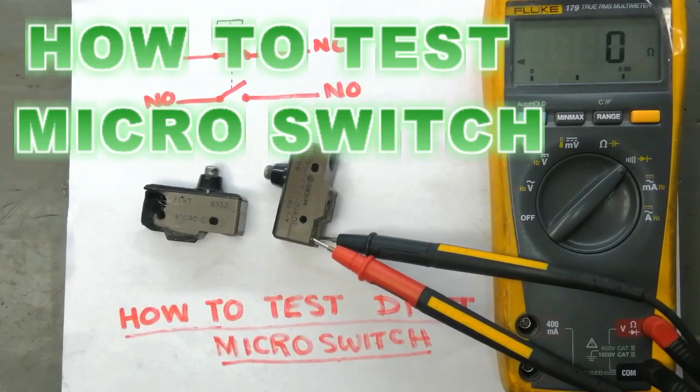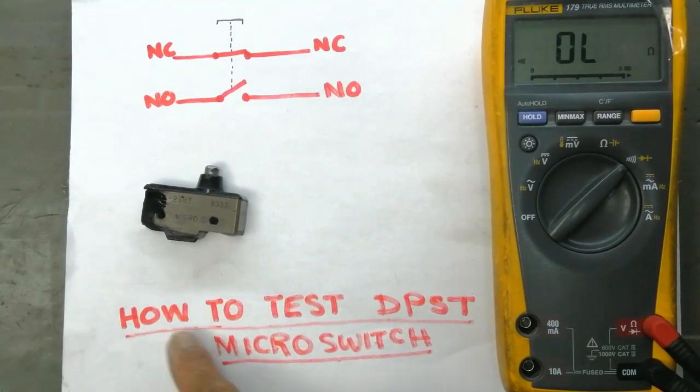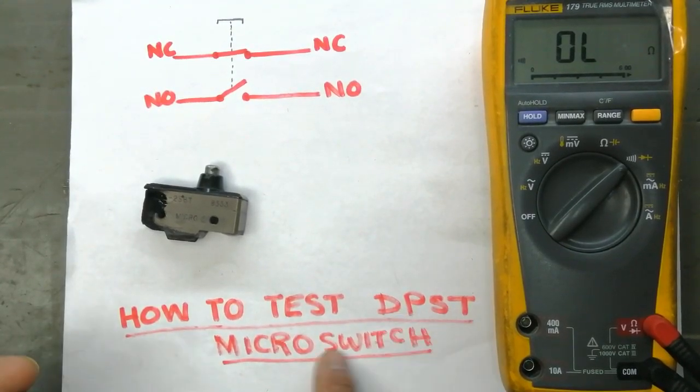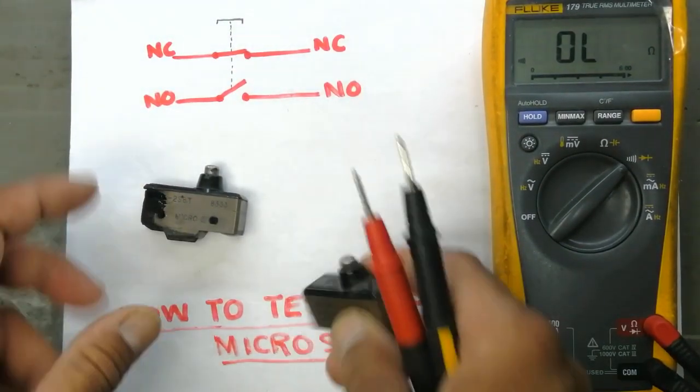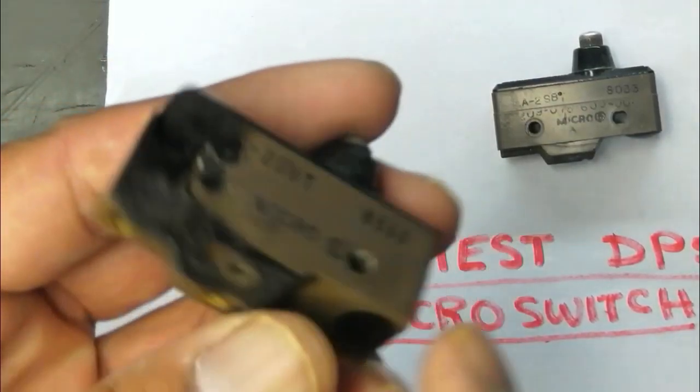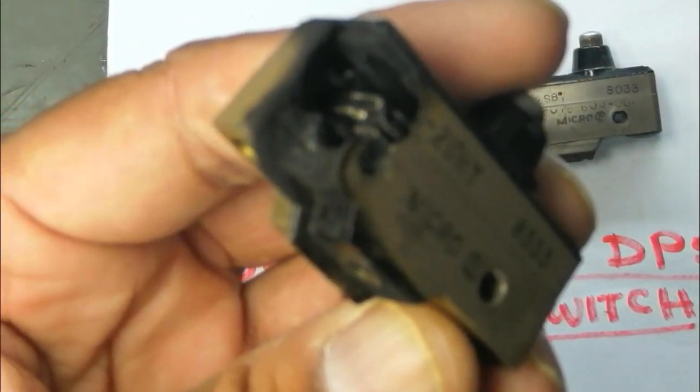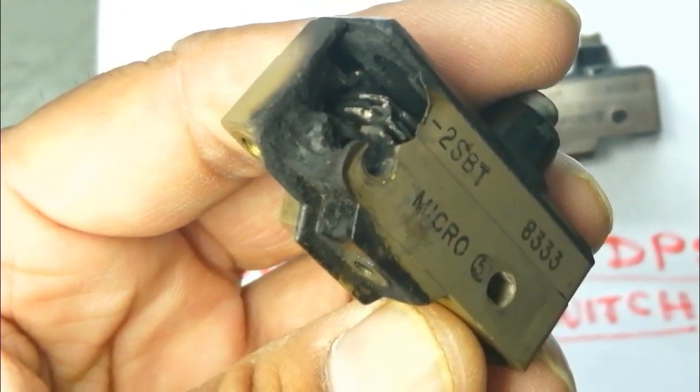Hi friends, welcome to Haseeb Electronics. Today I will discuss how to test a double pole single throw micro switch. This sensor switch was used in some system. We can see it is burned out, it has damage.